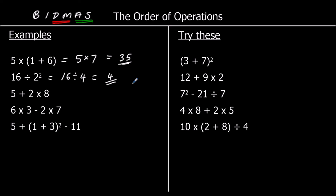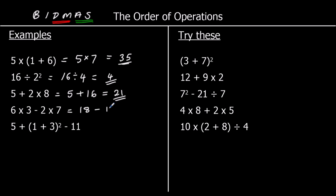The third one: no brackets, no indices, but we've got a multiplication, so we do that first. 2 times 8 is 16, and then 5 plus 16 is 21. The fourth one: no brackets, no indices, but there are multiplications. 6 times 3 is 18 and 2 times 7 is 14, so we have 18 take away 14, which is 4.